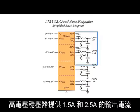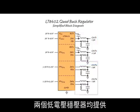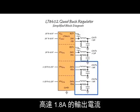The high voltage regulators provide output currents of 1.5 amps and 2.5 amps. Both low voltage regulators provide up to 1.8 amps of output current.